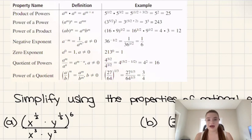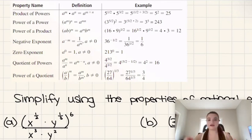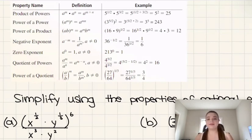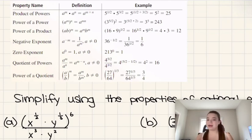Then we have power of a power. So if we take a base to a power and then take that entire expression to another power, we multiply the powers. Then there's power of a product — if we have a times b taken to the power of m, that's the same as taking a to the power m and b to the power m and then multiplying them.